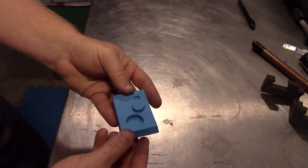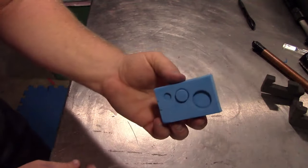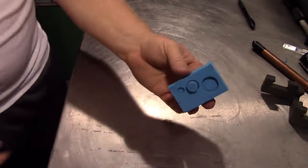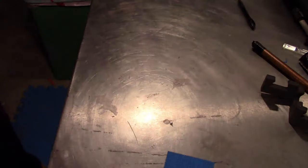There you go. Protrusions, buttons, circles, whatever you need. It can be done with a little bit of foam, a little bit of patience and some pipes. There you go. Stay crafty.